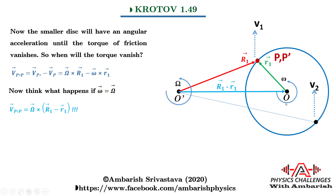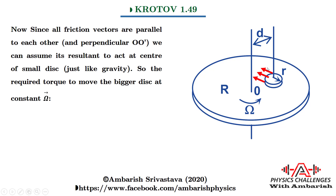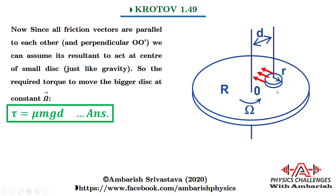This leads to our answer for Part 1: the steady state angular velocity of the smaller disc is small omega equal to capital Omega, because at this condition all friction vectors become perpendicular to the line O'O, producing zero net torque about O. For Part 2, since the friction field is uniform and can be concentrated at the center of the smaller disc, the frictional torque on the bigger disc is simply mu*mg*d, where d is the separation between the axes. So the required torque to maintain constant Omega is M = mu*mgd.